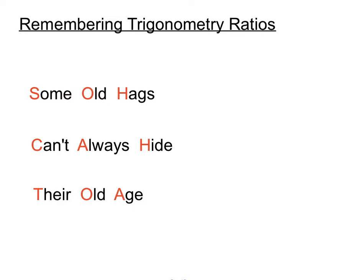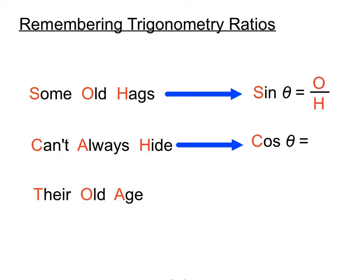From S, O, and H in "some old hags": sin Theta equals O over H, opposite over hypotenuse. From "can't always hide": cos Theta equals A over H, adjacent over hypotenuse. And from "their old age": tan Theta equals O over A, opposite over adjacent. It's just a funny way of remembering the combinations of sides involved in the sin, cos, and tan ratios.